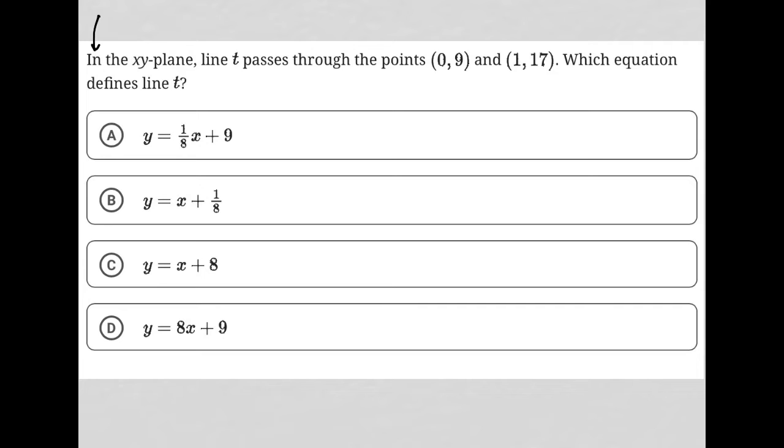If I'm trying to find the equation for a line, I'm always going to use y equals mx plus b, where m is the slope and b is the y-intercept.